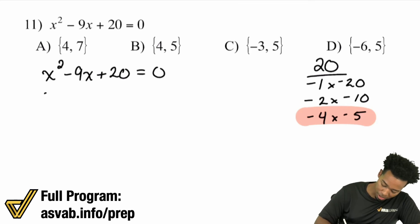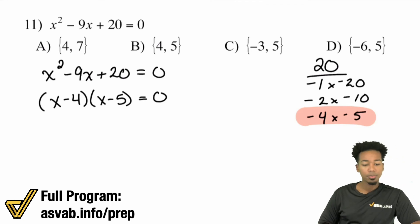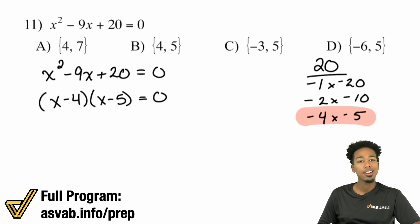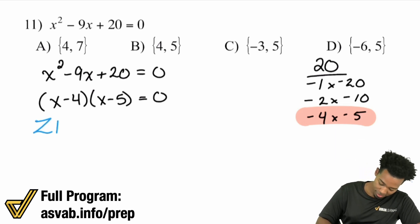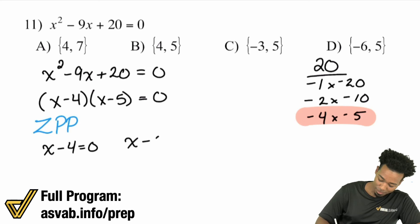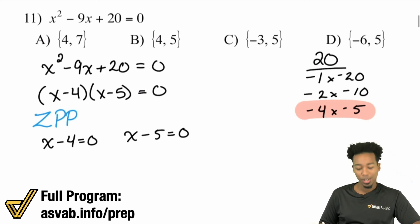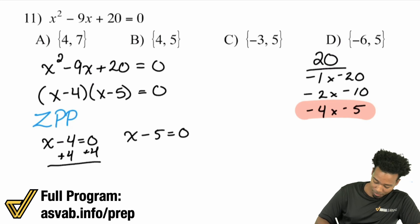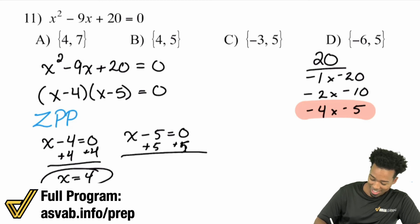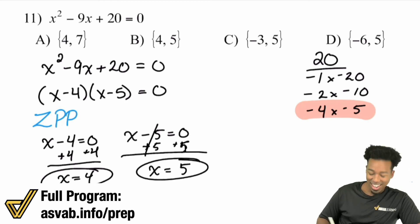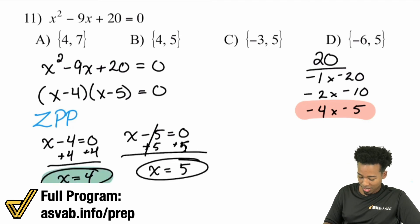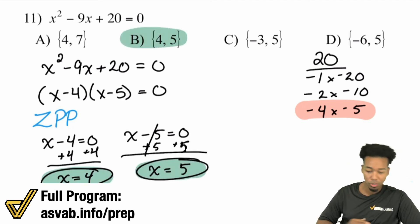Applying the factored form: (x − 4)(x − 5) equals 0. Zero product property: set x minus 4 equal to zero and x minus 5 equal to zero. Adding 4 to both sides gives x equals 4; adding 5 to both sides gives x equals 5. So x equals 4 and x equals 5 — that is choice B.